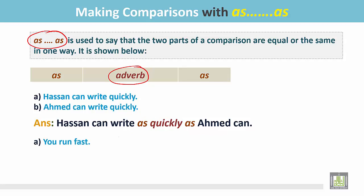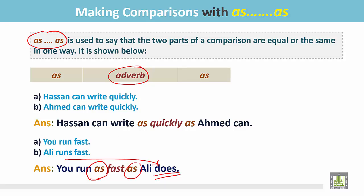Other two examples. You run fast. Ali runs fast. So you and Ali can run fast. You run as fast as Ali does. Here is the auxiliary verb we write for this verb. We don't write fast again because the adverb we write between as...as.